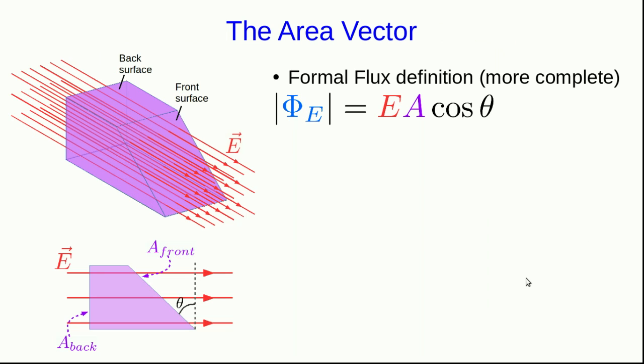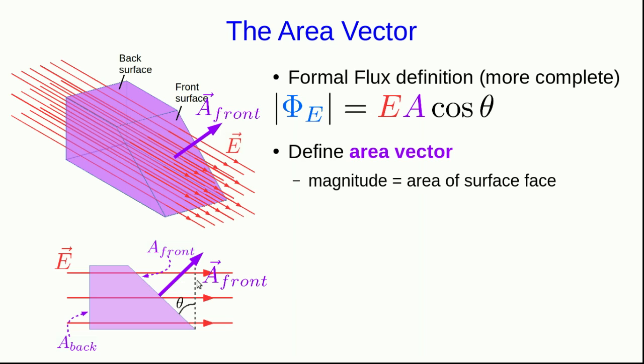Before I deal with the sign convention, I'm just going to write down a more compact way of writing what we've got already. And to do it, I'm going to define something a little odd. I'm going to define an area vector. And the definition of it is that it's a vector that points out of a face on the surface. It has a magnitude which is defined as being equal to the area of the face that it's pointing out of. And its direction is perpendicular to the face and outward. It doesn't point in to the surface, it points outward.